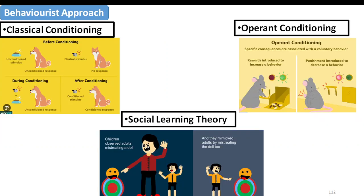The behaviorist approach comprises three popular theories that define the learning tendencies of individuals: classical conditioning, which comprises experiments with the dog, essentially driven by Ivan Pavlov; operant conditioning involving a mouse; and social learning theory by Albert Bandura, wherein kids are exposed to various types of movies and given a bunch of toys. We have had an elaborate discussion around all three of these conditioning theories in the chapter on learning, so for a detailed understanding, refer to that chapter in this lecture series.